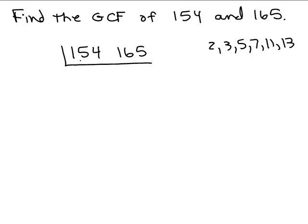7 does happen to go into 154, but it does not go into 165. So 2 didn't work, 3 didn't work, 5 didn't work, 7 didn't work. We're on 11. Does 11 go into both of these numbers? Yes, it actually does. You'd have to do division by 11, or if you know the trick for multiplying numbers by 11 — which I have a video on — you might recognize the pattern. 11 goes into 154 fourteen times, and 11 goes into 165 fifteen times. Now we've got two consecutive integers, so we're done. 11 is the greatest common factor this time.